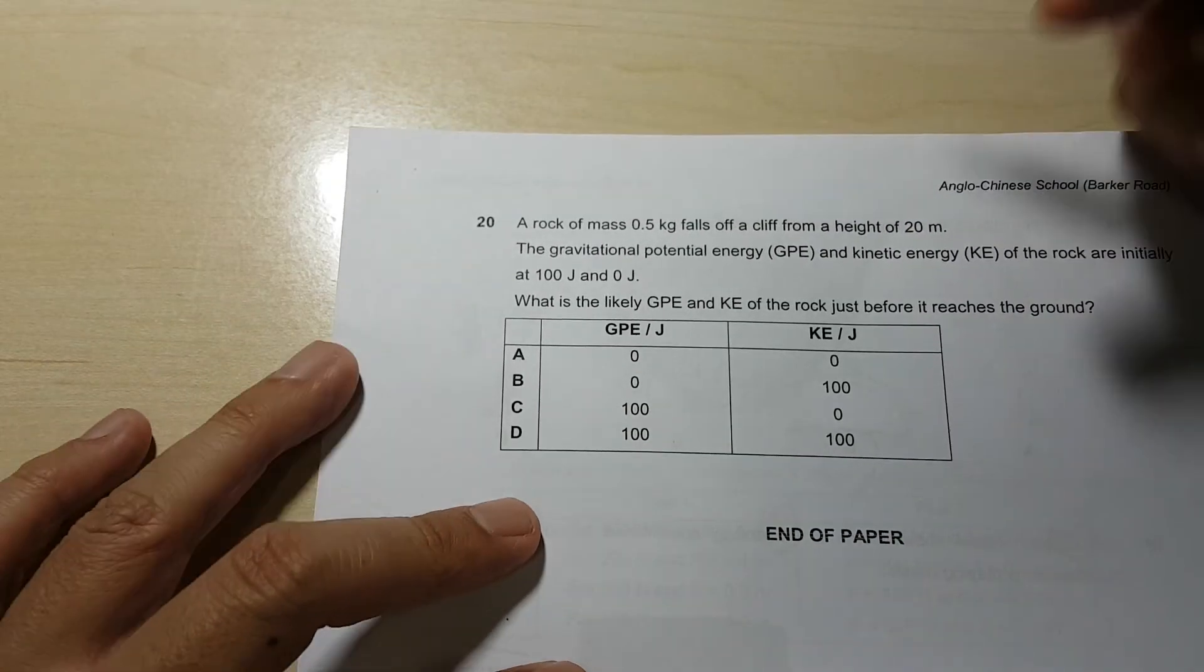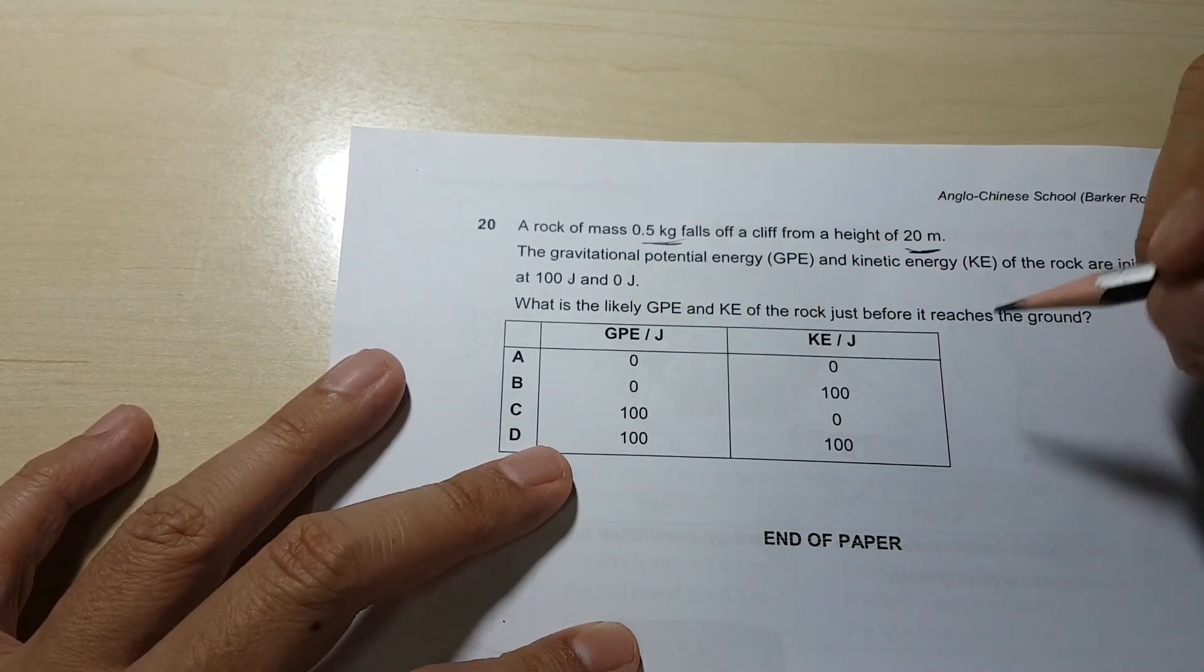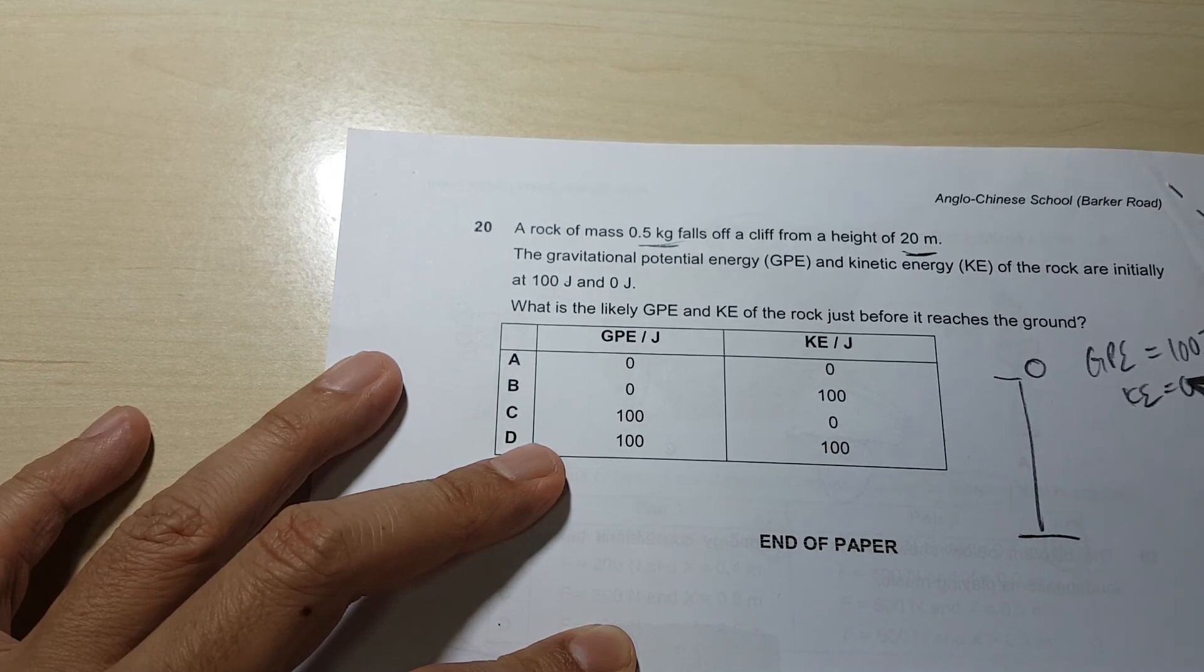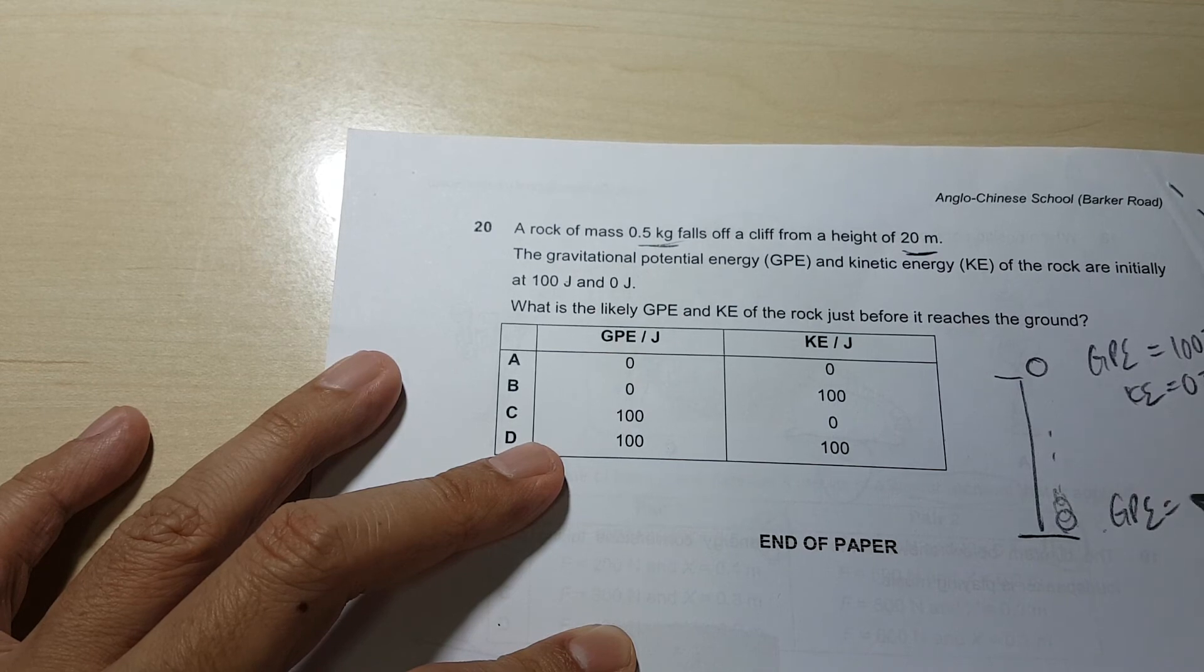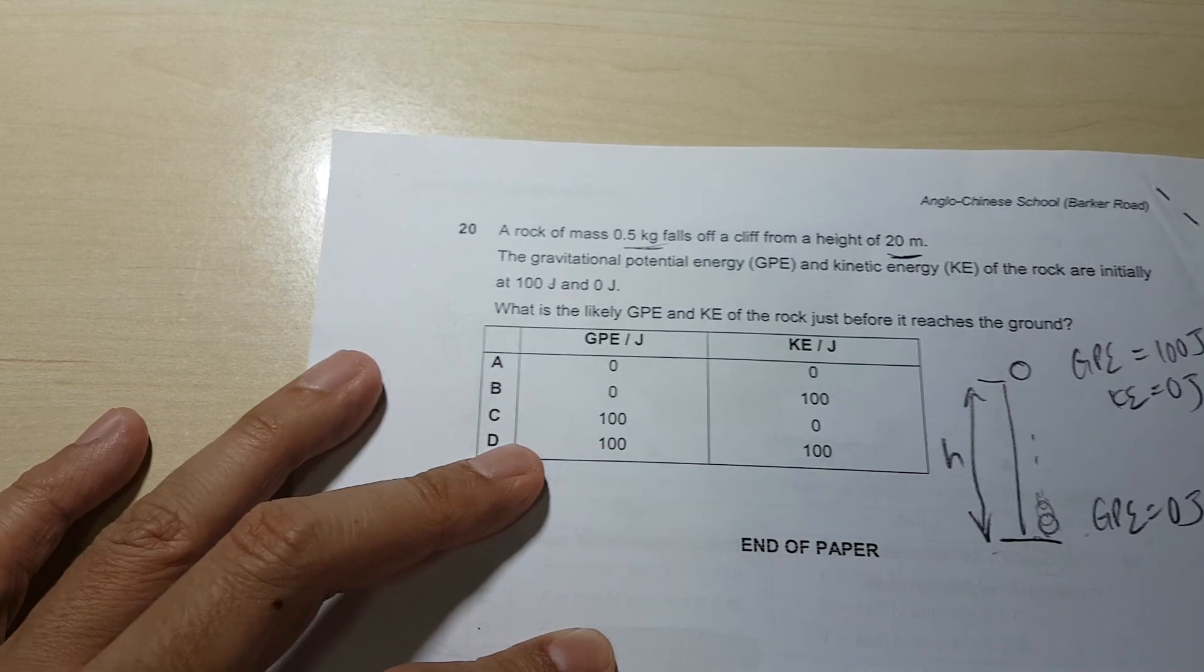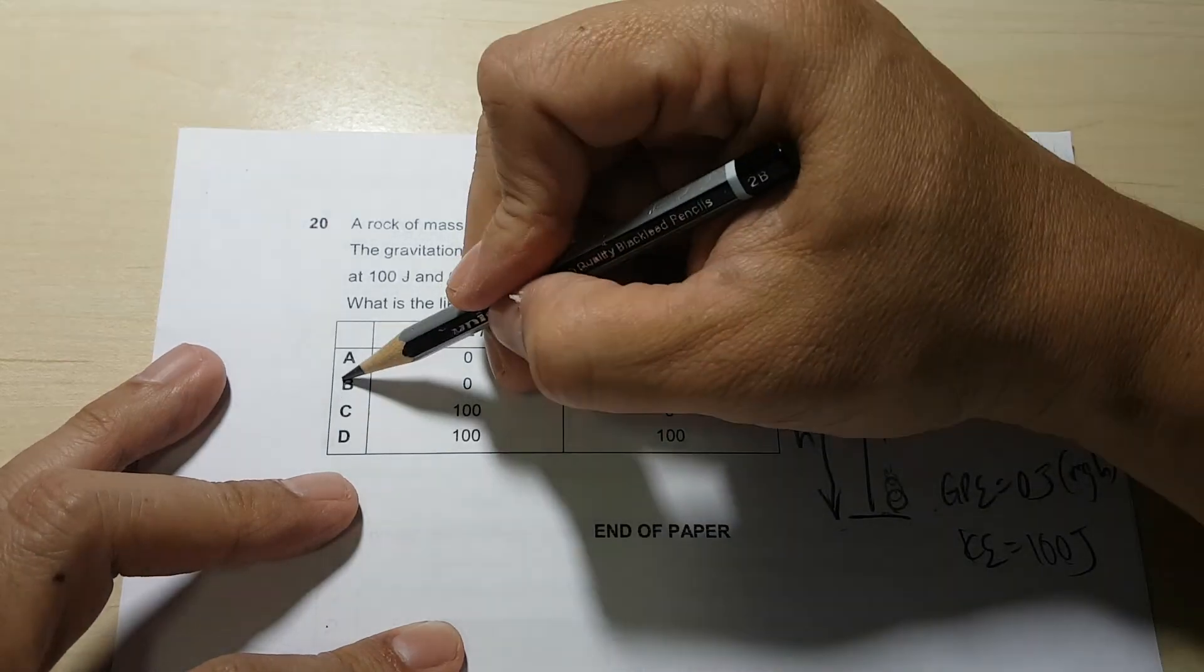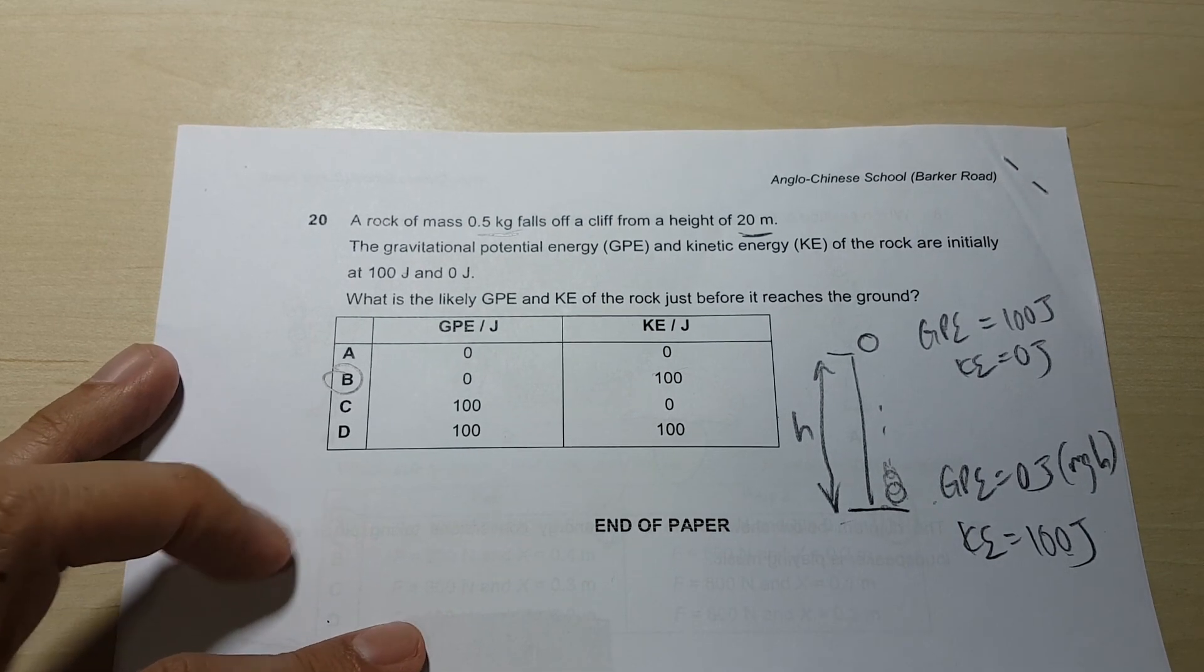Last question for paper 1 will be rock falling from a height of 20 meters. GPE and KE initially 100 and 0. So if I have a rock falling at a height, GPE equals 100 joules. If it's not moving, KE equals 0 joules. By the time it goes down over here, what's the GPE? GPE got to be 0 joules because just before it hits the ground, no distance. So based on MGH, if H is 0, this will be 0. And KE will be conversion of energy 100 joules. So 0, 100 that leaves us with answer B. But in real life, this one will be slightly less because some energy is lost in the meantime.